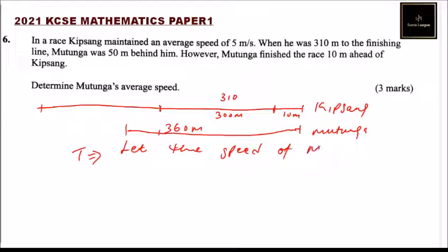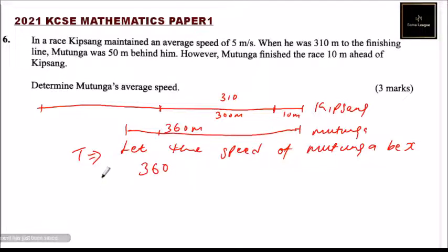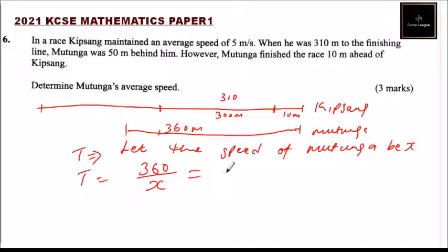Let the speed of Motunga be x. We can say: time = distance divided by speed, so 360 divided by x equals the time taken by Kipsang to cover 300 meters at a speed of 5 meters per second.